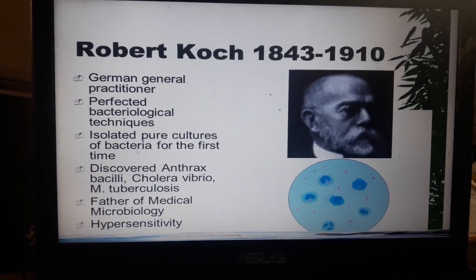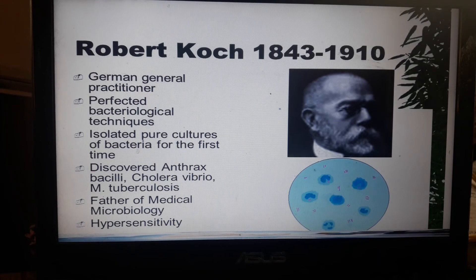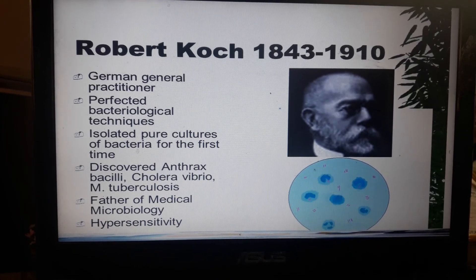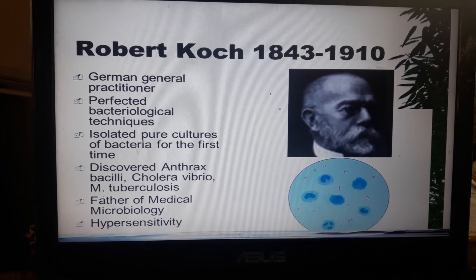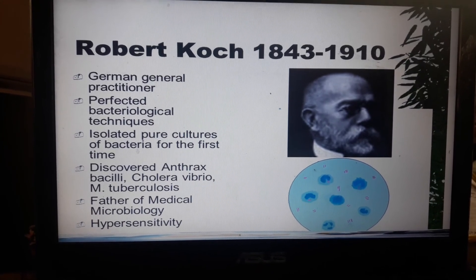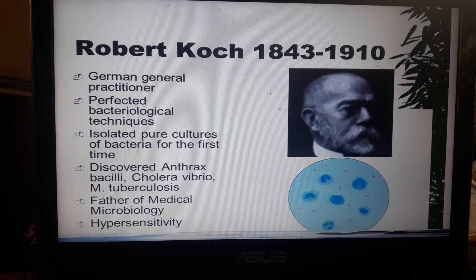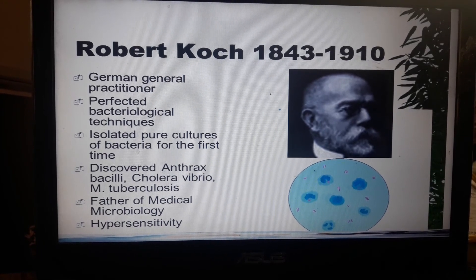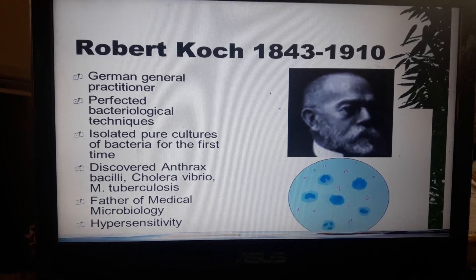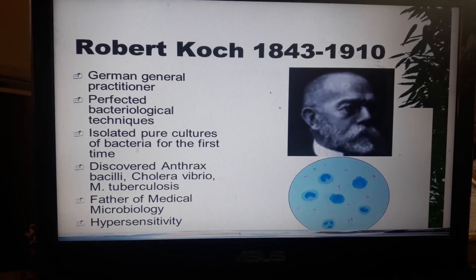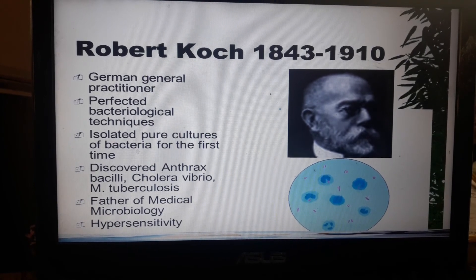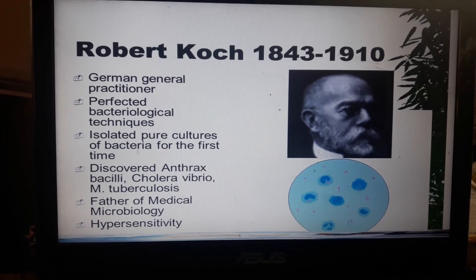Robert Koch, 1840 to 1910, was a German scientist who perfected bacteriological techniques. He isolated pure cultures of bacteria for the first time and discovered anthrax, the disease caused by Bacillus anthracis, as well as Vibrio cholerae that causes cholera, and Mycobacterium tuberculosis that causes tuberculosis. He is also considered the Father of Medical Microbiology and studied hypersensitivity, meaning there is what we call an allergic reaction associated with bacteria.